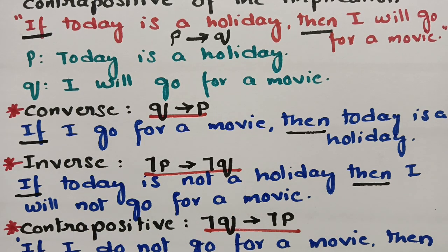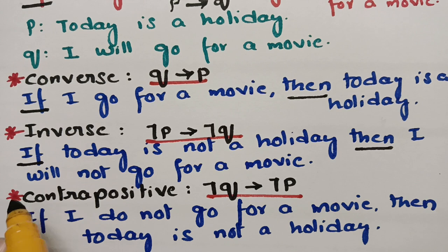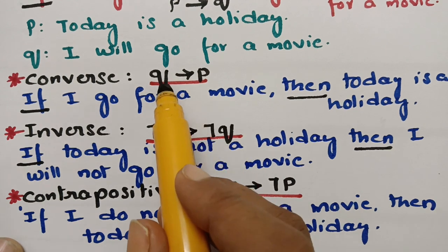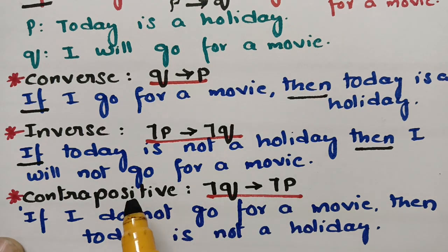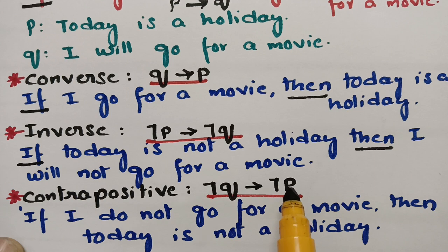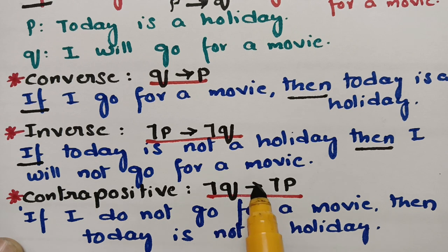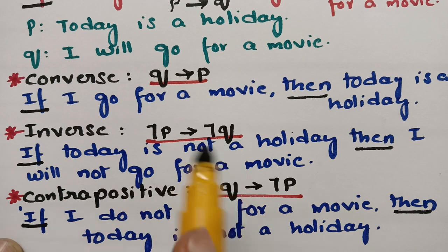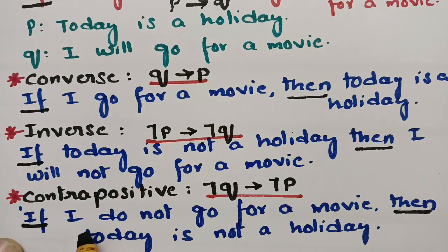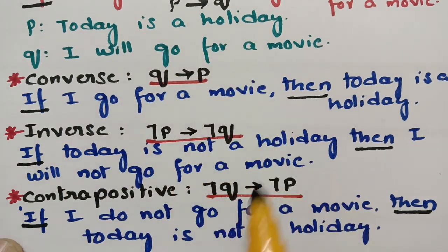Next is the contrapositive. As you know, contrapositive also starts with C. The formula is negation Q implies negation P, so the negative statement of Q runs first, then the negative statement of P. We start with if and then. Q is 'I will go for a movie,' so its negation is 'I do not go for a movie.' P is 'today is a holiday,' so its negation is 'today is not a holiday.' Contrapositive: 'If I do not go for a movie, then today is not a holiday.'